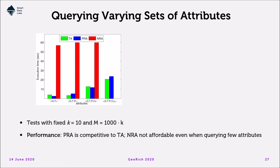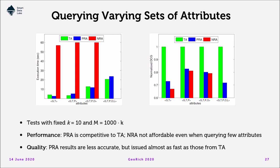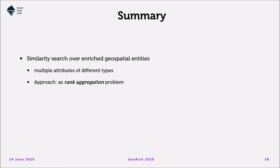We also performed tests against varying numbers of attributes. In terms of performance, Partial Random Access is competitive with the Threshold Algorithm. No Random Access is not affordable even when queries involve very few attributes. In terms of quality, Partial Random Access is less accurate than the Threshold Algorithm, but note that its results can be issued almost as fast.